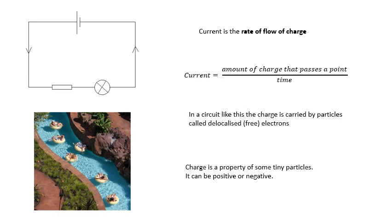Current is the rate of flow of charge. 'Rate of' means per second — the amount of charge that passes a point in a certain time. In an electrical circuit this charge is carried by electrons. Current is not the rate of flow of electrons; it's the rate of flow of charge. Free electrons can move through the wire, and when these delocalised electrons move, you have a flow of charge — and current is that rate of flow of charge.